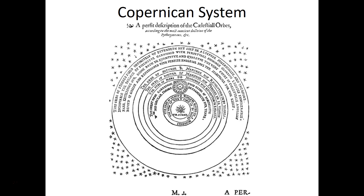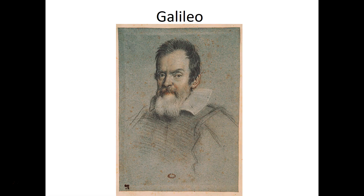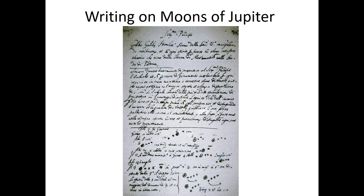Others do the same math and find out that maybe Copernicus was right. New tools start to show up, including a telescope. Galileo will begin to use these tools, does the same math, and comes up with the idea that Copernicus is right. He also observes Jupiter and notices little stars around it. What he figures out is that these aren't stars — they're other things, and they're moving around Jupiter. That throws the whole idea that everything revolves around the Earth in perfect little spheres into the trash can.